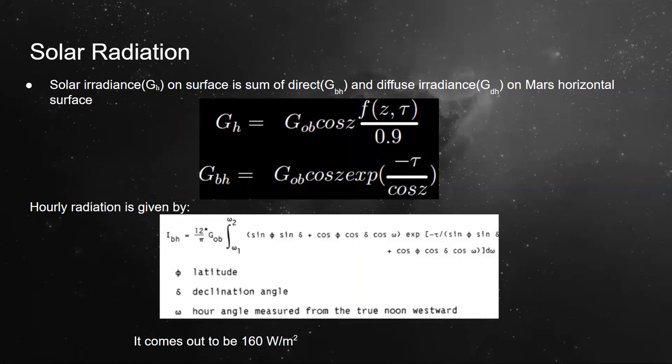The total beam irradiance and the diffusive beam irradiance on Mars can be calculated using the following formulas. Finally, the early radiation is an integral that depends upon the latitude, declination angle, and the hours angle measured from the true noon westwards.